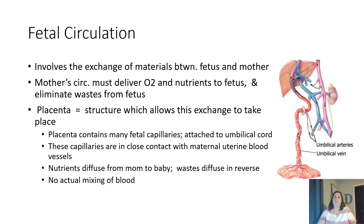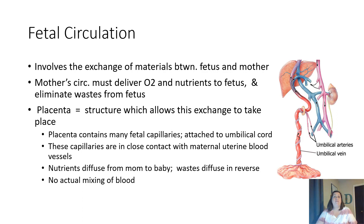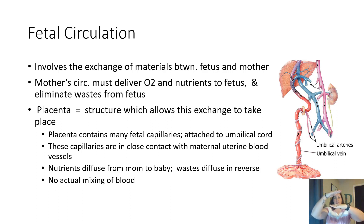Now let's talk about fetal circulation. Fetal circulation involves the exchange of materials between the fetus and the mother. The mother's circulation must deliver oxygen and nutrients to the fetus because the fetus cannot breathe in oxygen while in amniotic fluid. The mother's body also eliminates the waste from the fetus's cellular respiration. This exchange happens through the placenta, an organ which contains many fetal capillaries attached to the umbilical cord, in close contact with the mother's uterine blood vessels. They're not actually touching, but diffusion happens from mother to baby and baby to mother.